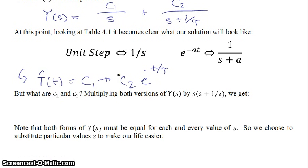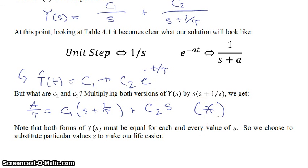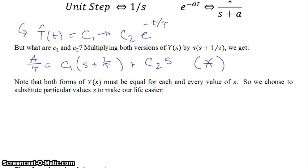After multiplying through and equating, we get: A over tau equals C1 times (s plus 1 over tau) plus C2 times s. We'll call this equation star. This equation must hold for every value of s, so we can substitute in particular convenient values of s to simplify.